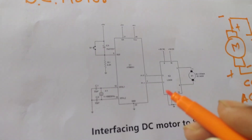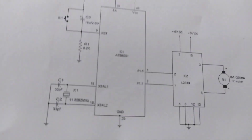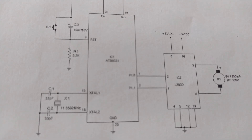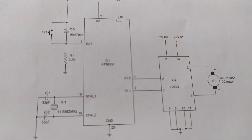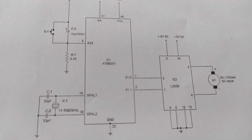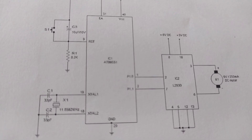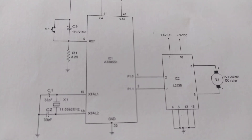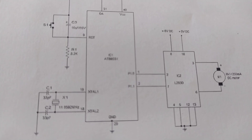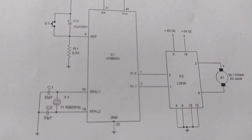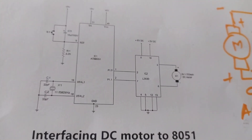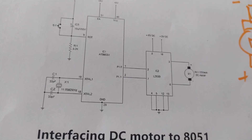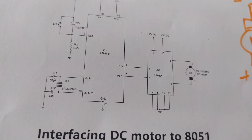This DC motor cannot be directly connected to the microcontroller, because the microcontroller's sinking current is very less — around 20 milliamperes. Motors require 1000 milliamperes or more. So we cannot directly connect the microcontroller to the DC motor. For that, we require an additional driver circuitry, which may be a specific IC, a relay, or transistor-based driver circuitry.